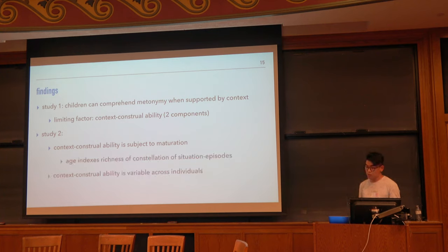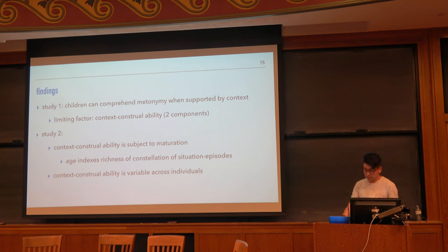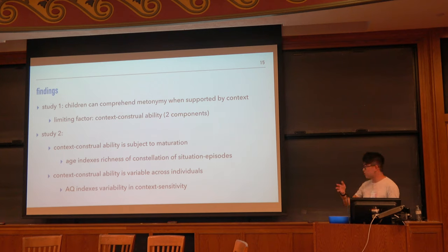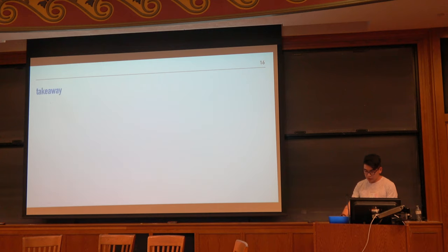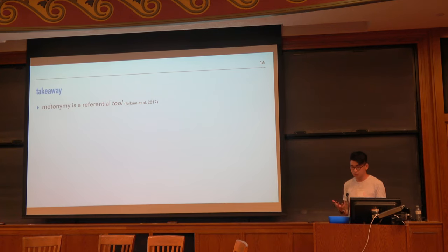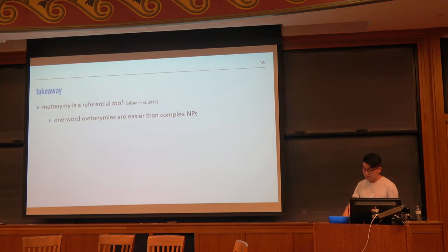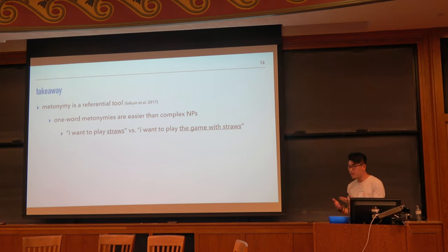We also showed that context construability is variable across individuals. The AQ is not correlated with age — it's a different effect — and we use this existing measure of context sensitivity that's been used in all sorts of language and psycholinguistic studies. These results are painting a picture where metonymy is this powerful referential tool for communication in both children and adults, and it's useful for economical reasons. Falcom et al. 2017 found that it might actually be easier for young children to use metonyms instead of complex noun phrases.